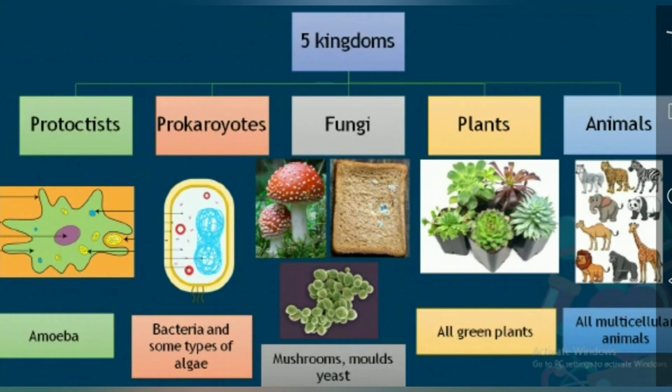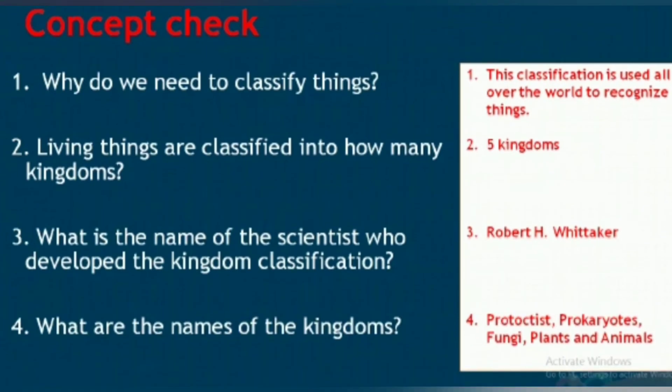Examples of the five kingdoms: Protoctists — amoeba is an example; these are unicellular organisms. Prokaryotes — also unicellular, examples include bacteria and some types of algae. Fungi — examples are mushrooms, molds, and yeast; they are both unicellular and multicellular. Plants — all green plants; multicellular. Animals — all multicellular animals.